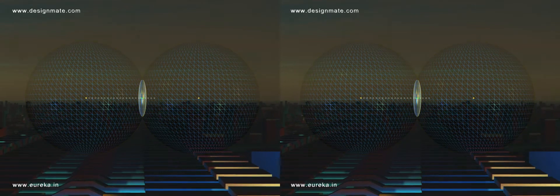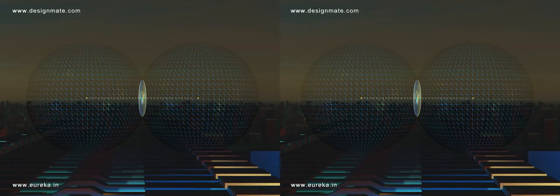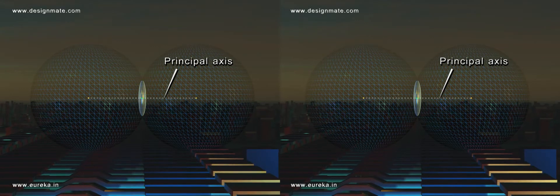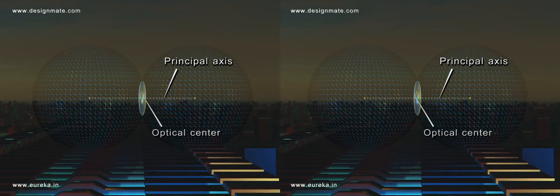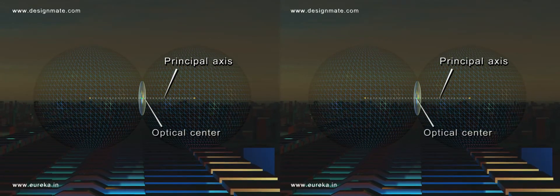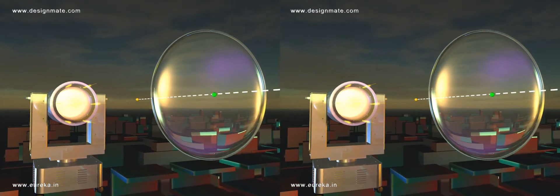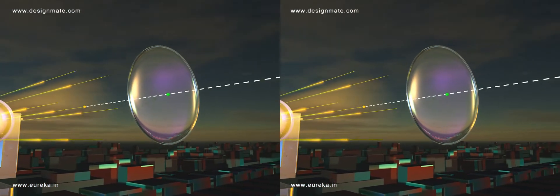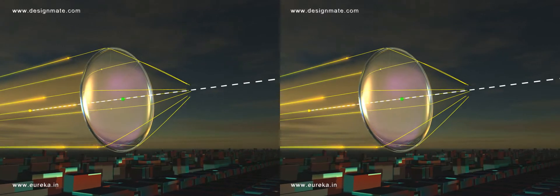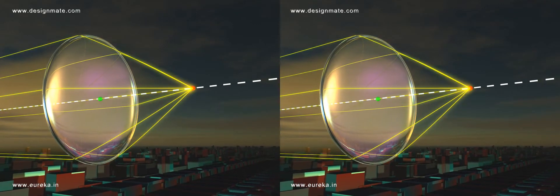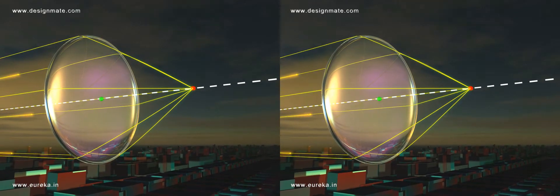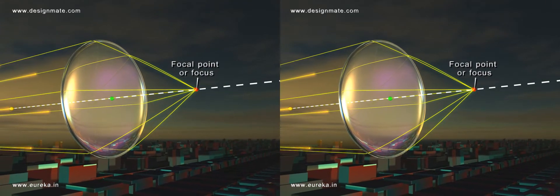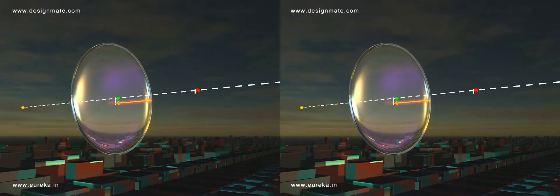The line joining the center of curvature on both sides of the lens is known as the principal axis, which passes through the optical center of the lens. Light rays parallel to the principal axis and incident on one side of the lens undergo refraction and converge at a point on the principal axis on the other side. This point is called the focal point or focus of the lens.